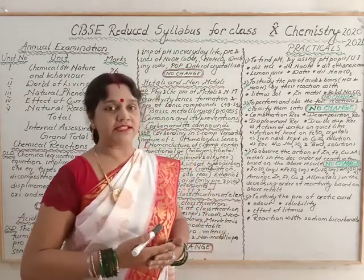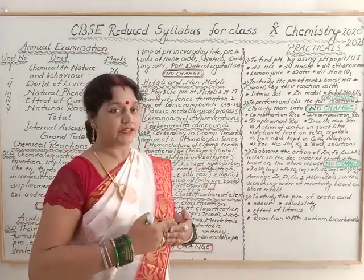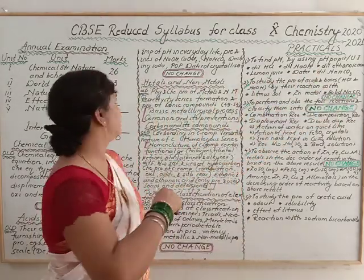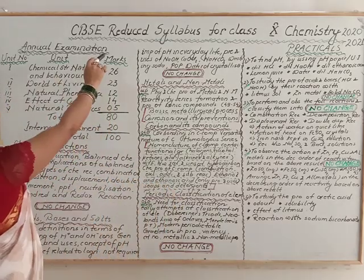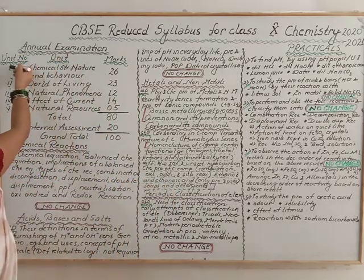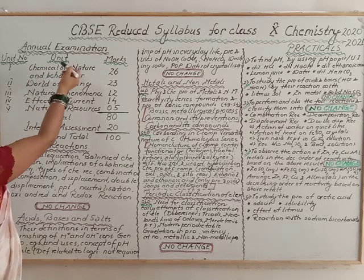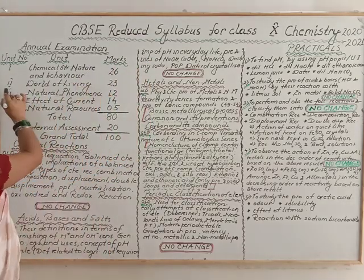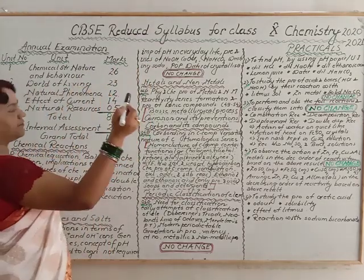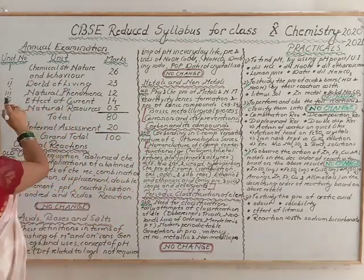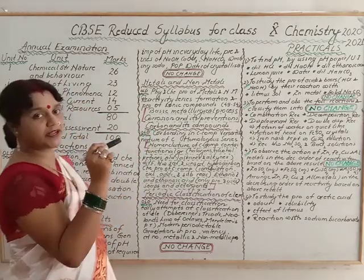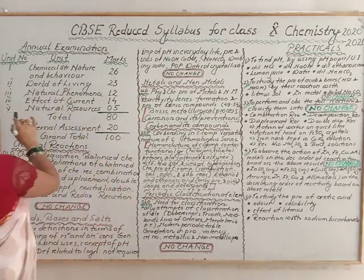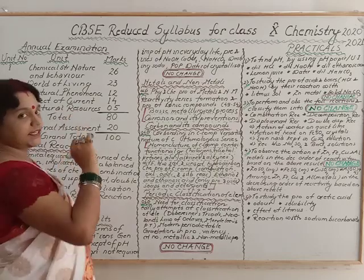30% of the syllabus will be reduced. In the annual examination, there are 5 units. First is chemical structure, nature and behaviour — 26 marks. Second is world of living — 23 marks. Third is natural phenomena — 12 marks. Fourth is effect of current — 40 marks. And fifth is natural resources — 5 marks.